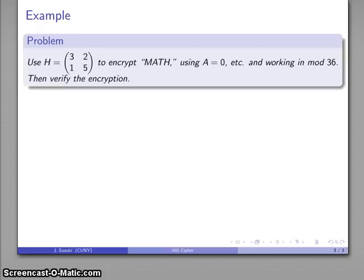For example, let's pick a random matrix, how about this one: H equals (3, 2; 1, 5). And I'll encrypt MATH using A equals 0 and so on, and I'll work mod 36.